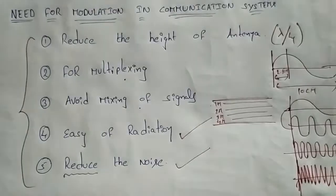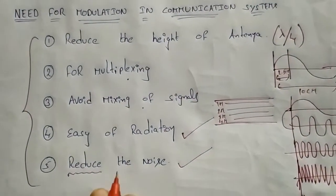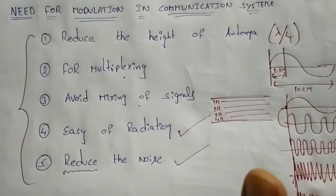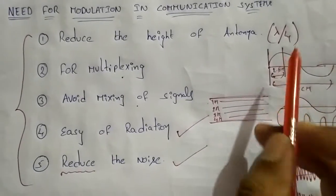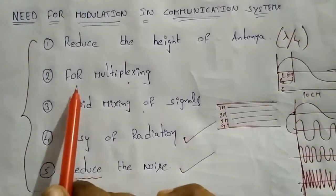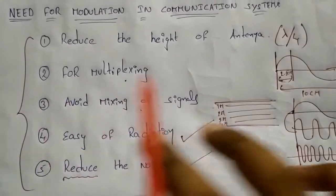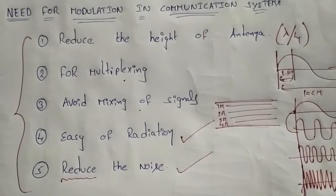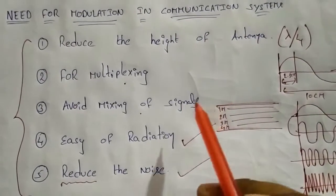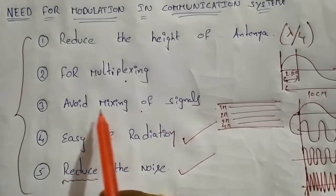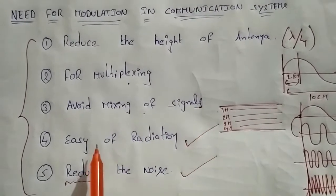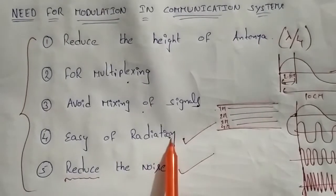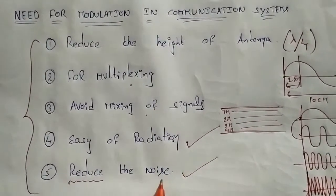There are 5 needs for modulation: 1. Reduce the height of the antenna — the minimum antenna height is lambda by 4. 2. Multiple signals on a single path. 3. Avoid mixing of signals. 4. Easy radiation over distance. 5. Reduce the noise.